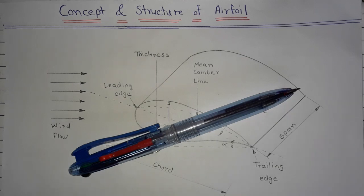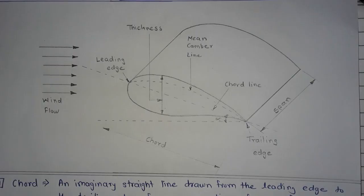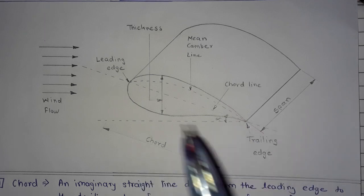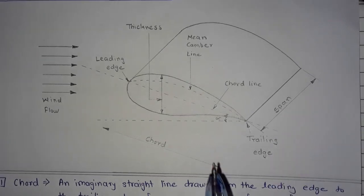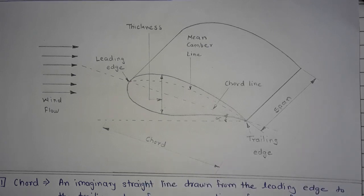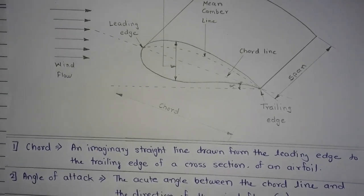So let's start. This is a schematic diagram of an airfoil which shows us the different terms used for various parts of an airfoil. Before going to the concept of airfoil, we will first see the various terms used in it. The first term is cord.